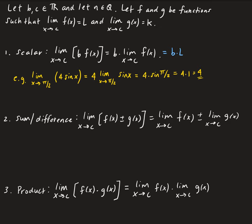The second property is the sum and difference. Basically, if we have the limit of F of X plus or minus G of X, we can split up the limits. So we have the limit of F as X approaches C plus or minus the limit of G as X approaches C. You can apply this to either addition or subtraction. Since the limit of F is L and the limit of G is K, we just get L plus or minus K.